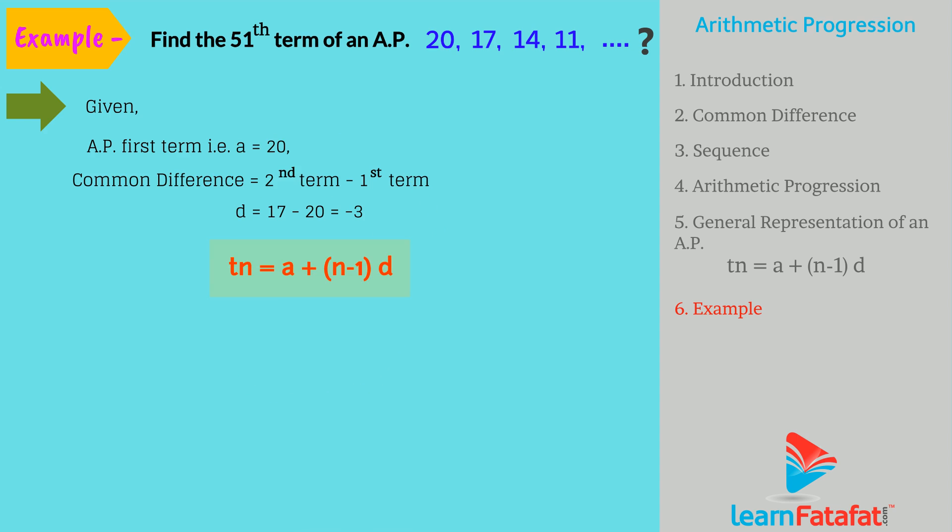So, using the general formula TN is equal to A plus (N minus 1) into D, we get T51 is equal to 20 plus (51 minus 1) into minus 3. On solving the equation, we get T51 is equal to minus 130.